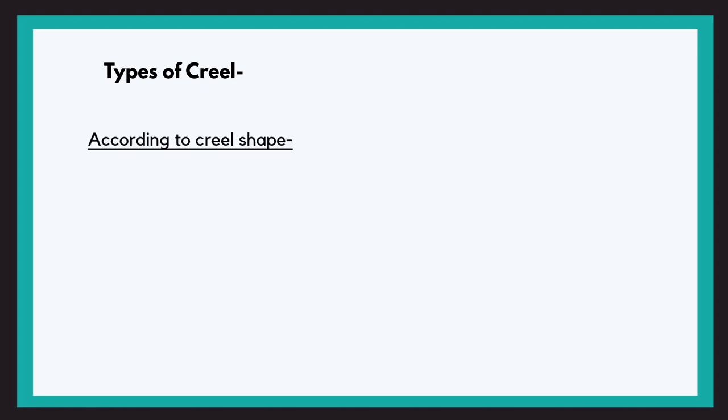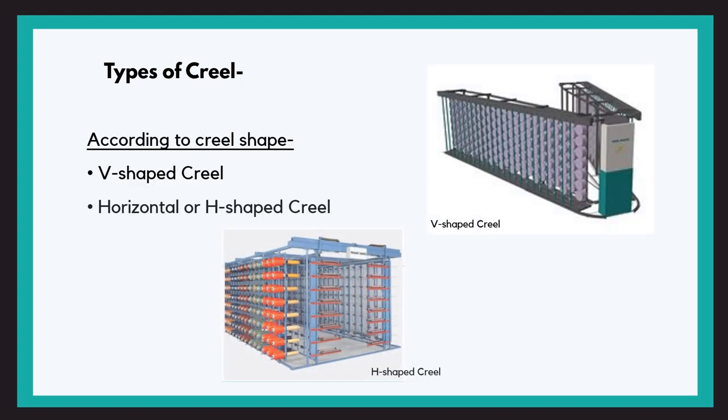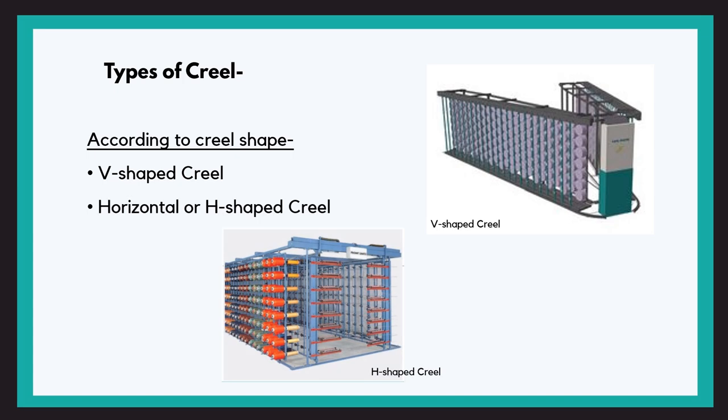Now we will be talking about creels. Creels are basically metallic frames that hold the yarn packages. We will now discuss the types of creels. Choosing the suitable type depends on many factors, like the weight of the packages, the yarn material, and the space available. According to the shape of the creel, there are two types: the V shape and the horizontal or H shaped creels.